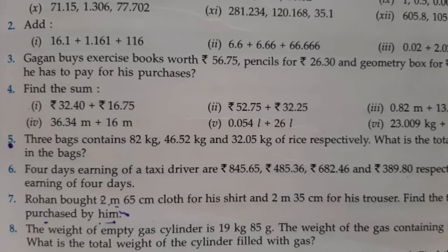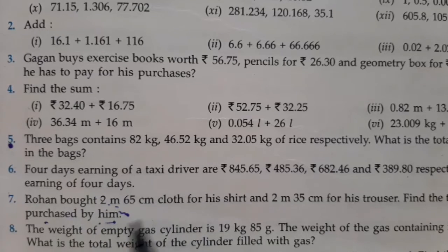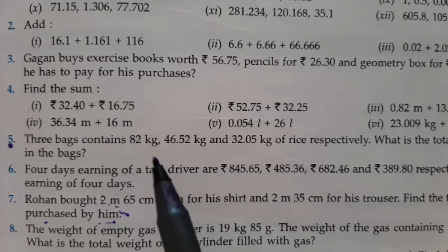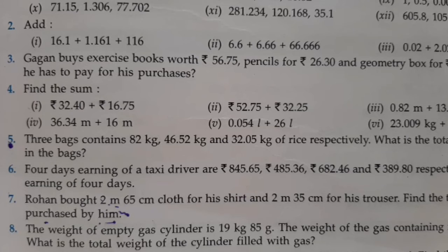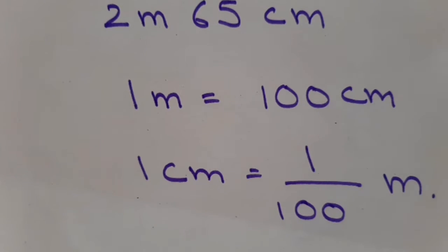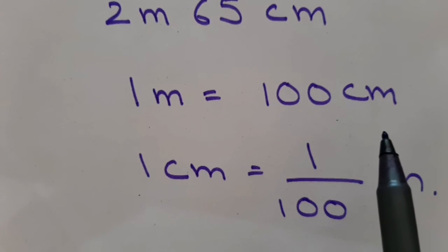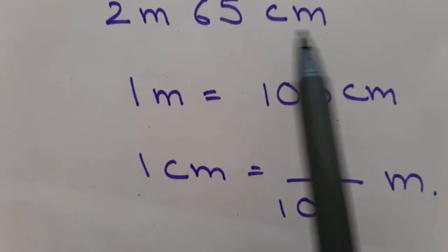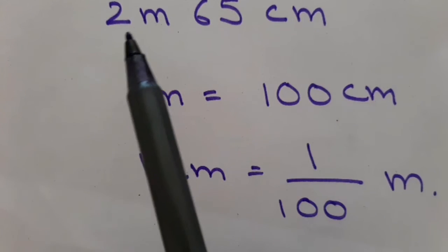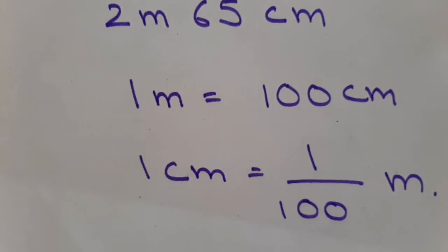Whenever two units are given, you have to change it into one unit. You can convert to meters or to centimeters — it is your choice. But we always recommend converting to the bigger unit. Here, meter is the bigger unit, so we will convert 2 meters 65 centimeters to meters. You know 1 meter is 100 centimeters, but to convert centimeters to meters: 1 centimeter equals 1/100 meter.